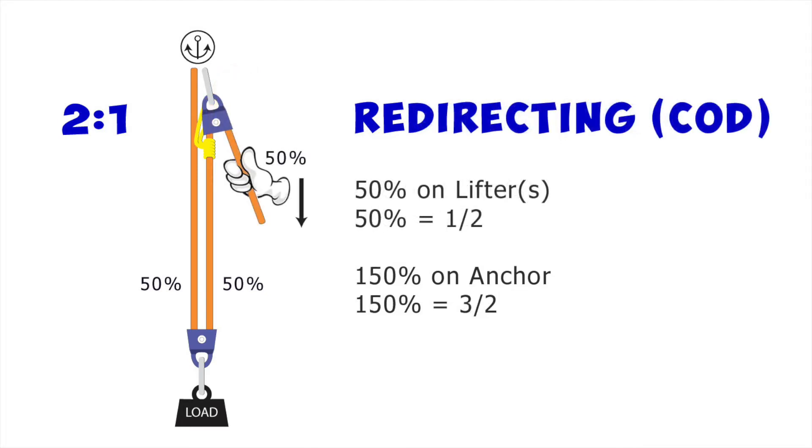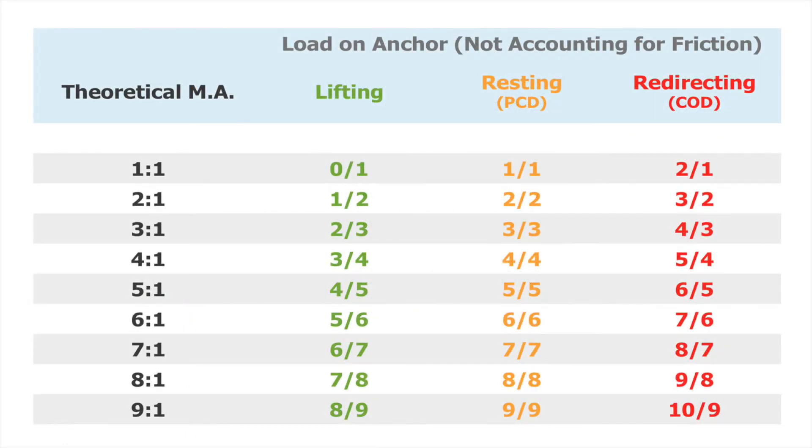If I choose to redirect the rope through a stationary pulley on the anchor so I can pull down instead of up, there will be three tension ropes, each with 50% of the load on it. Previously I was pulling up on the load, in essence helping the anchor hold the load. Now I am pulling down on the anchor, adding my pulling force to the weight of the load for a total of 150%.